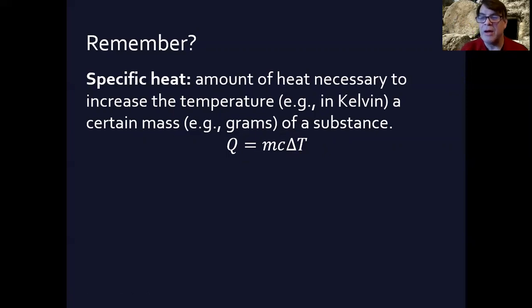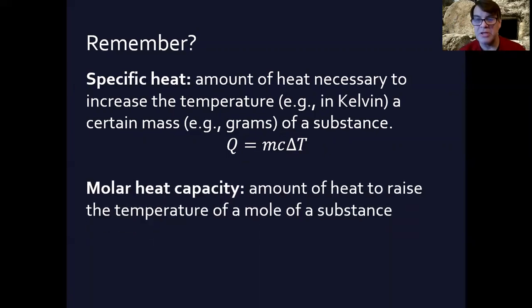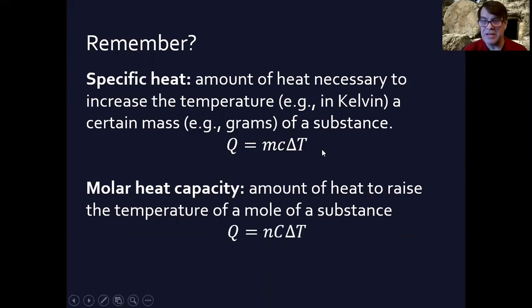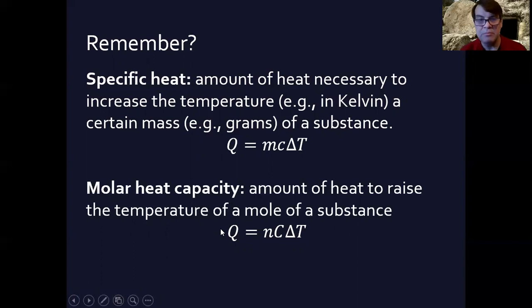Go look up that video. Now for this particular section we're more interested in another constant from chapter 17 called the molar heat capacity — the amount of heat it takes to raise the temperature of a mole of a substance by one degree kelvin. The formula is very similar: instead of mcΔT it's q = nCΔT, where n is the number of moles, big C is the molar heat constant, ΔT is in kelvin, and q is in joules.